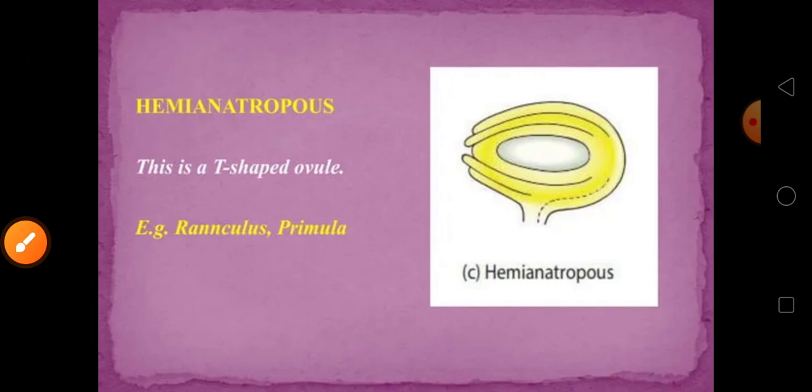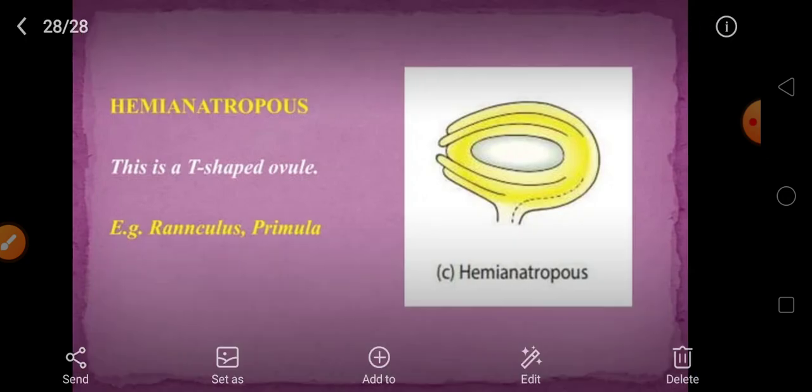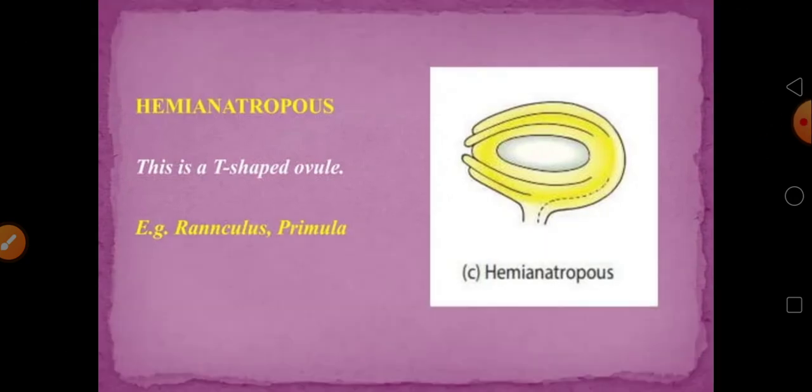Hemianatropus is a T-shaped ovule. So these are the different types of ovules found in plants.